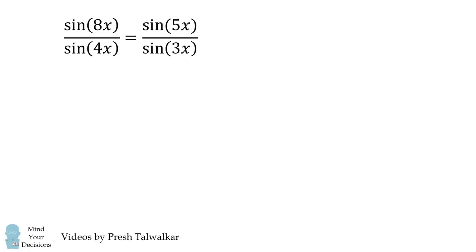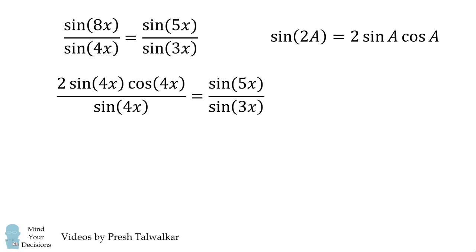Let's simplify from here. We'll use the sine double angle formula on sine of 8X. It simplifies to be the following. We can thus cancel out the sine of 4X terms.